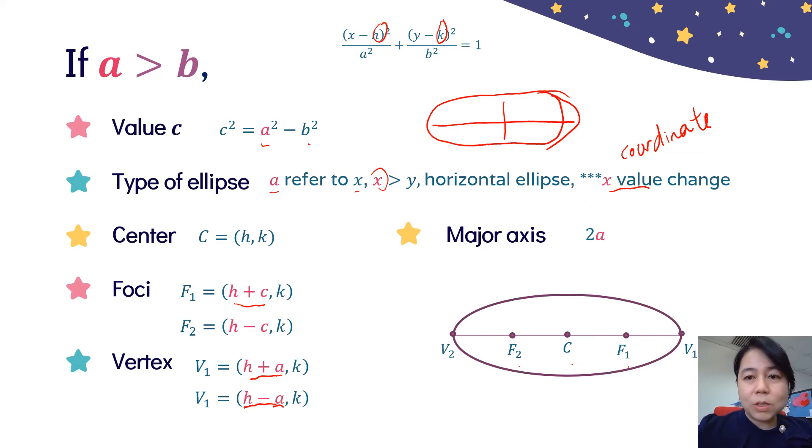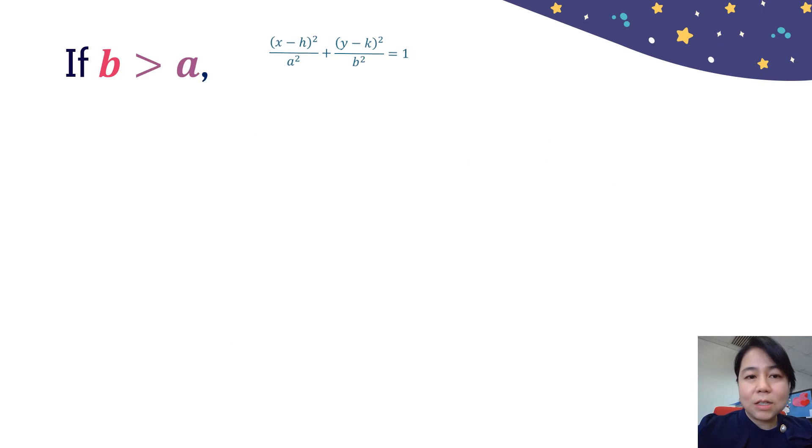Next, let us proceed to the next steps of the ellipse. Same formula that we have. We need to check our value A and B. Now, our B is greater than A. B always refer to Y, A always refer to X. To find the value C, always take the greater value minus the smaller value, so C² = B² - A².